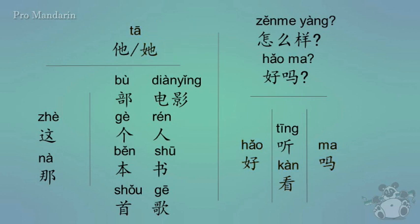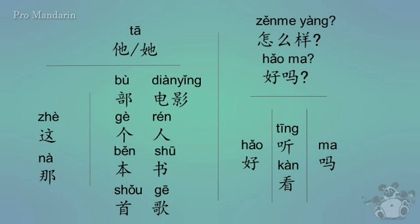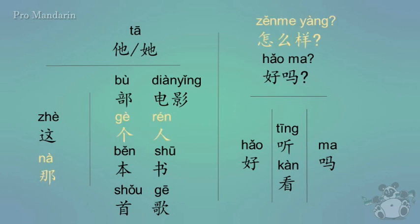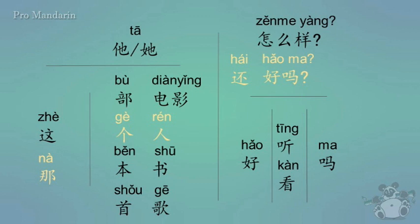Using tā zhǎng de, how would you say 'she looks good'? Tā zhǎng de hǎo kàn. Alternatively, you can leave out zhǎng de and say tā hǎo kàn, or just say hǎo kàn as a short answer. Now, how would you say 'how's that person doing'? Nà gè rén zěnme yàng. You could also say nà gè rén hǎo ma. And if you were asking 'is that person okay,' like maybe he got hurt, you'd say nà gè rén hái hǎo ma — adding in hái hǎo.